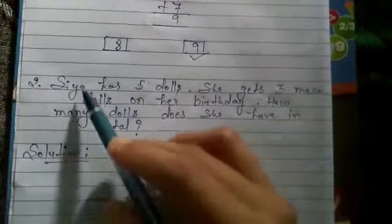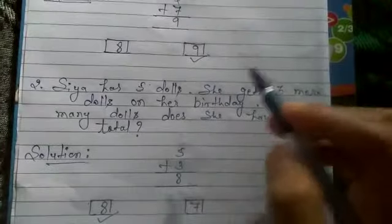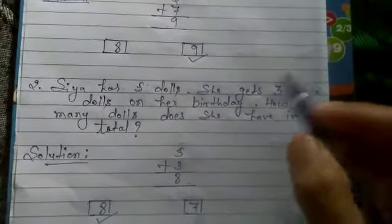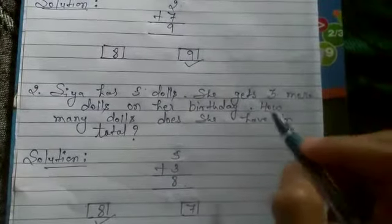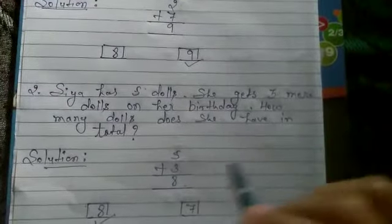Here we are saying that Sia has five dolls. Okay? And she gets three more dolls on her birthday. Now we have to find out that Sia has total dolls.